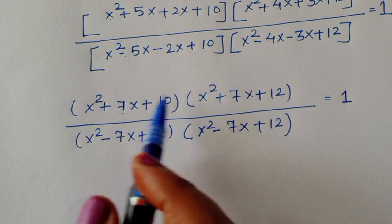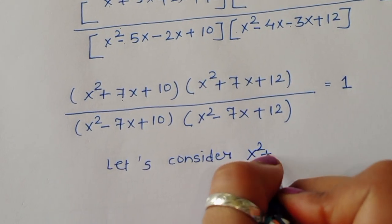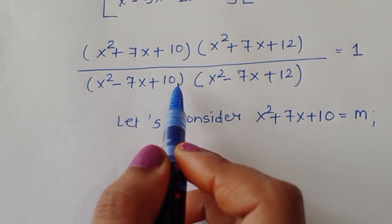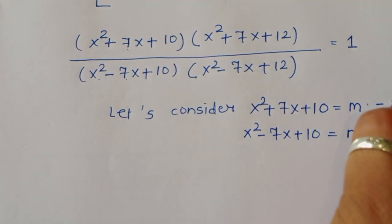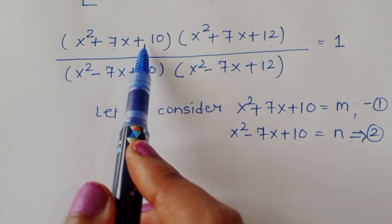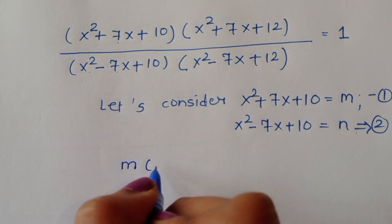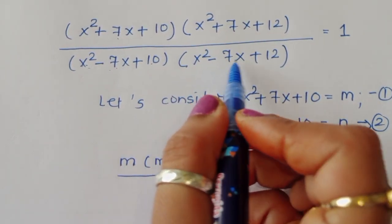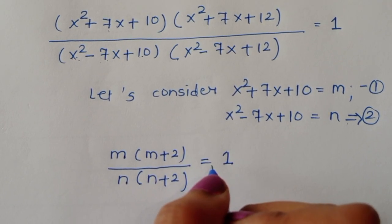Let's substitute: let m = x²+7x+10 (equation 1) and n = x²-7x+10 (equation 2). Then x²+7x+12 = m+2 and x²-7x+12 = n+2. So the equation becomes m(m+2) divided by n(n+2) equals 1.